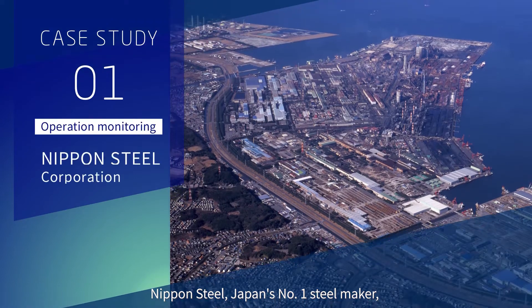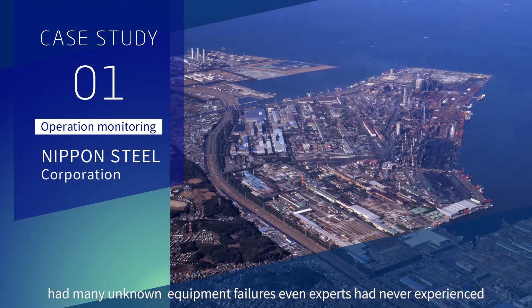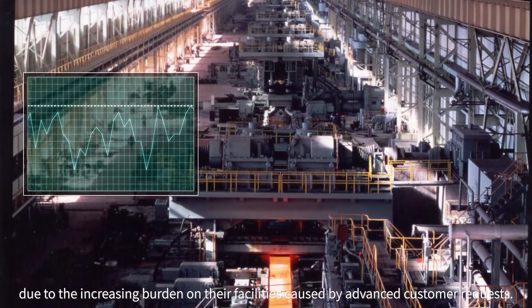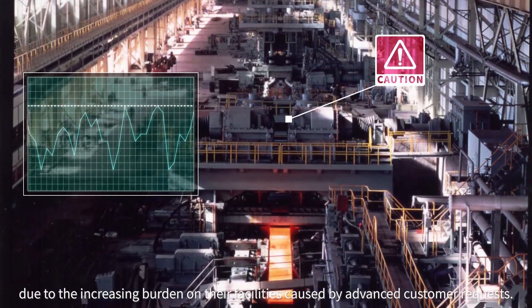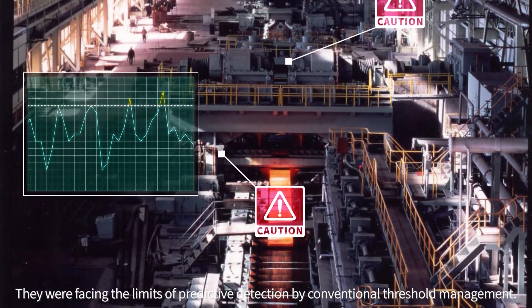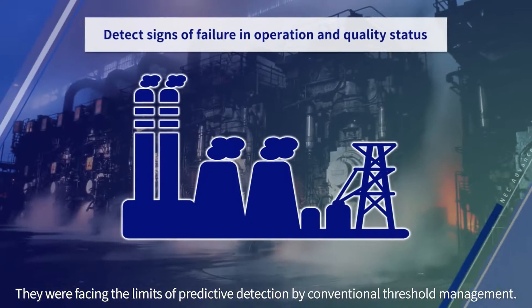Nippon Steel, Japan's number one steel maker, had many unknown equipment failures even experts had never experienced, due to the increasing burden on their facilities caused by advanced customer requests. They were facing the limits of predictive detection by conventional threshold management.